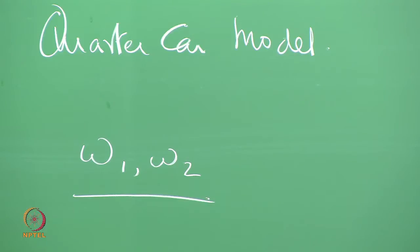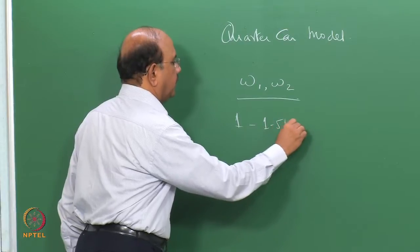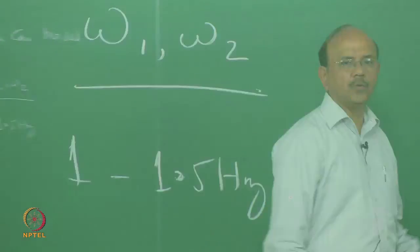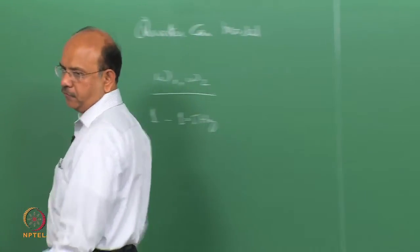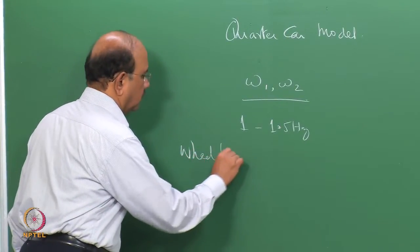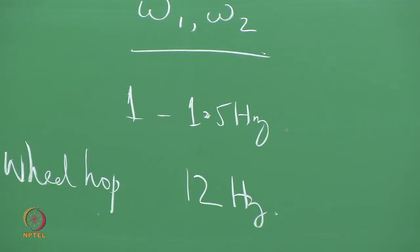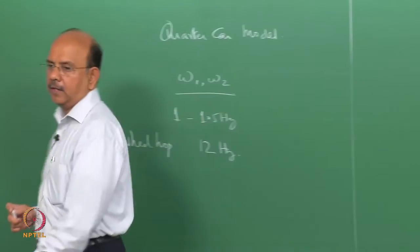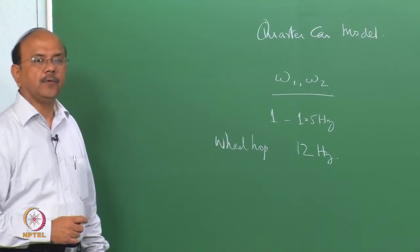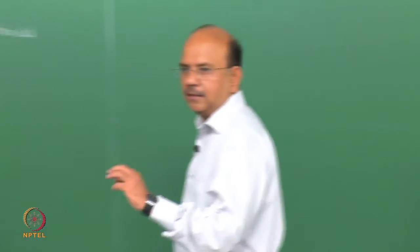The two natural frequencies are spaced such that omega 1, the lower one, is between 1 to 1.5 hertz — this has everything to do with the body of the vehicle. The second natural frequency, omega 2, is what is called the wheel hop frequency, closer to around 12 hertz, and may vary between 11 to 14 hertz. These are the two natural frequencies.